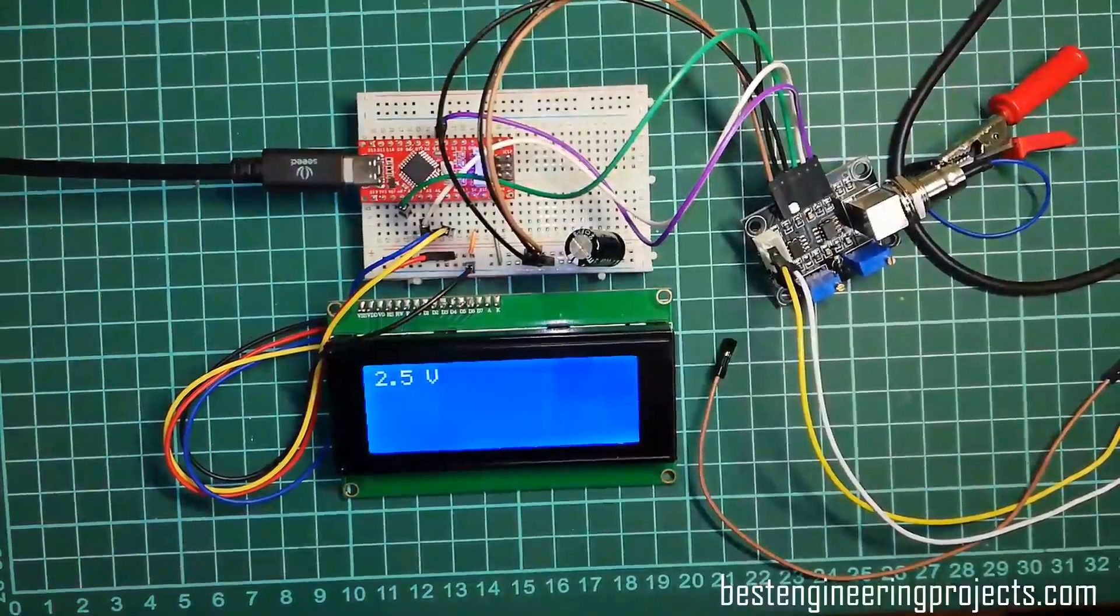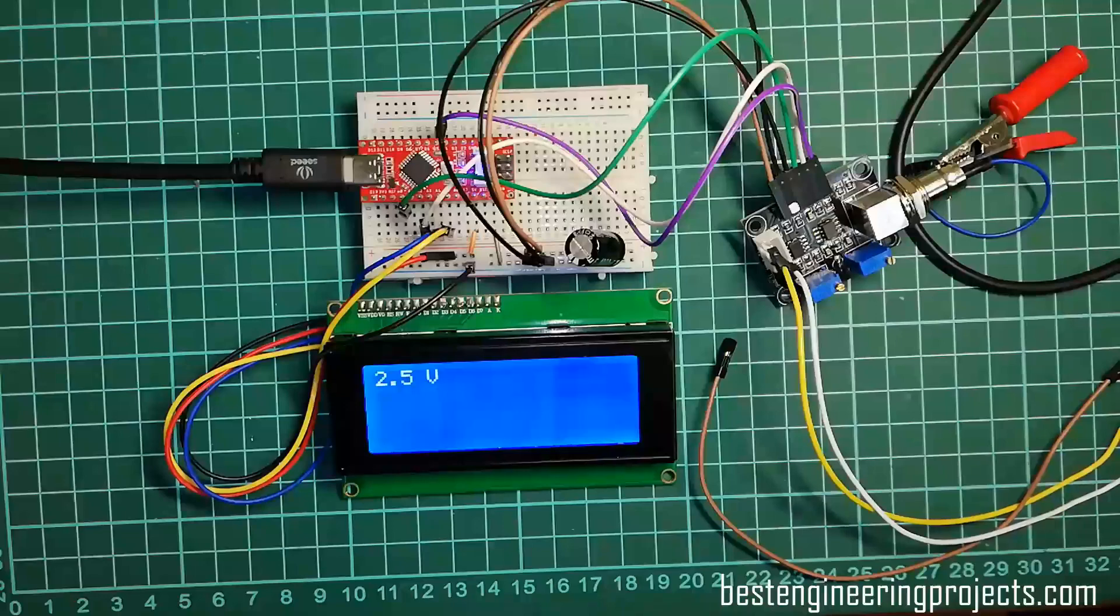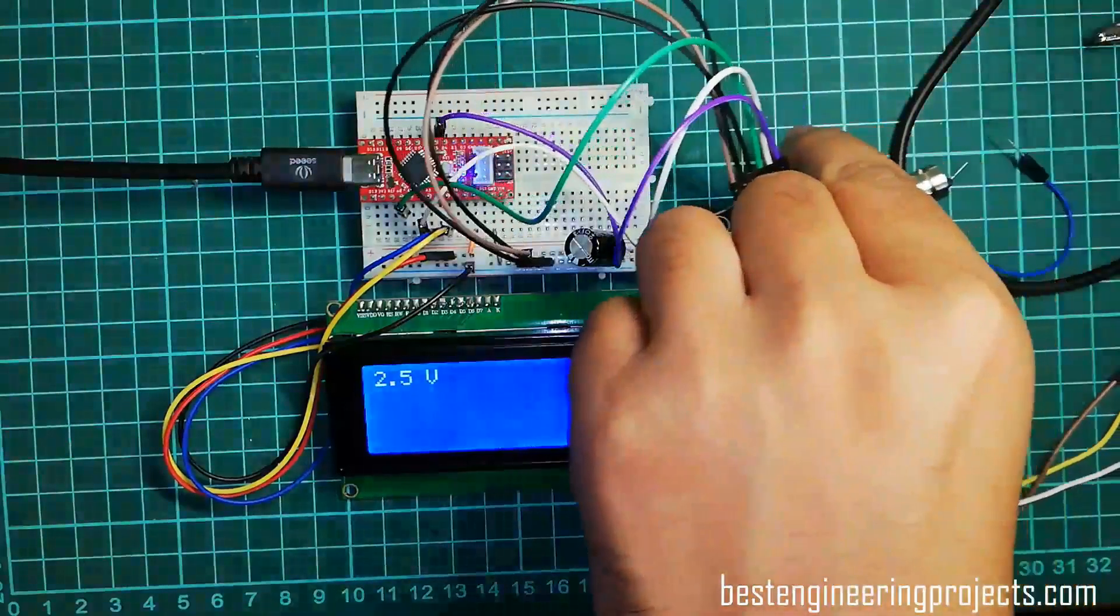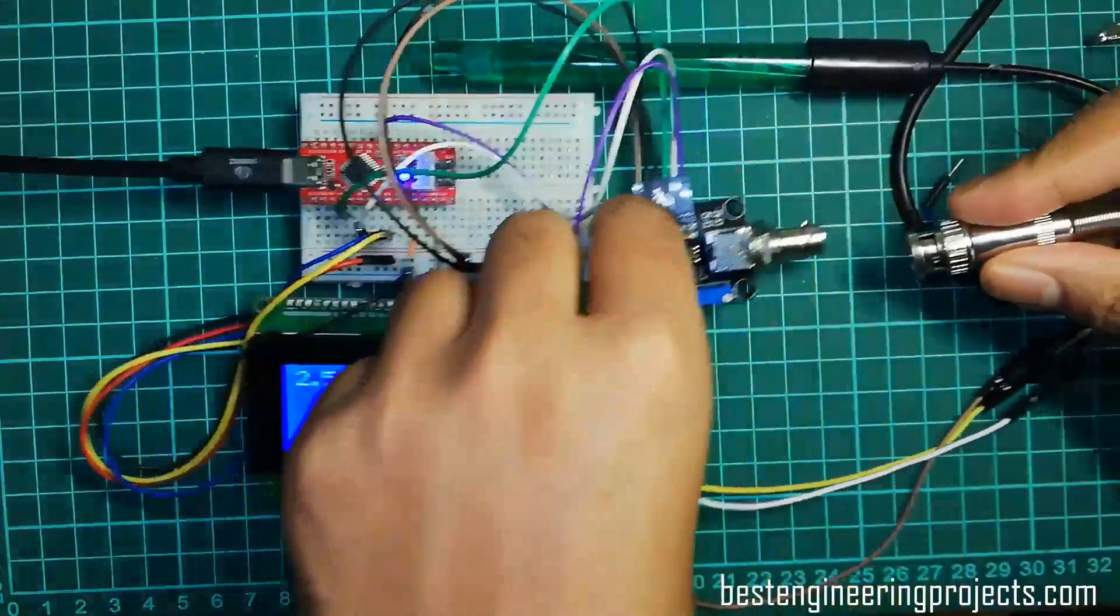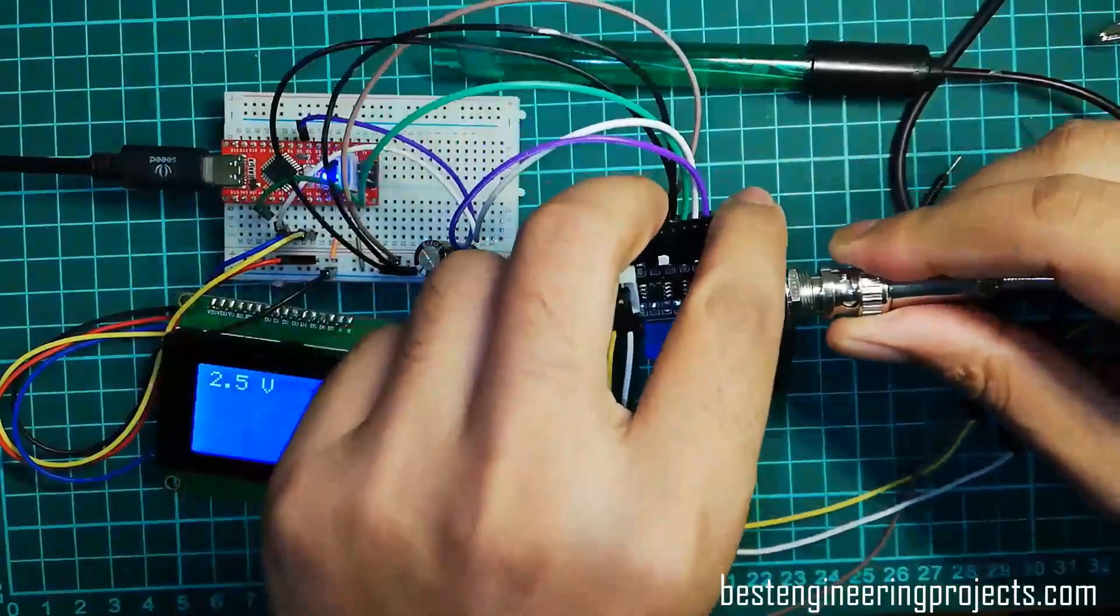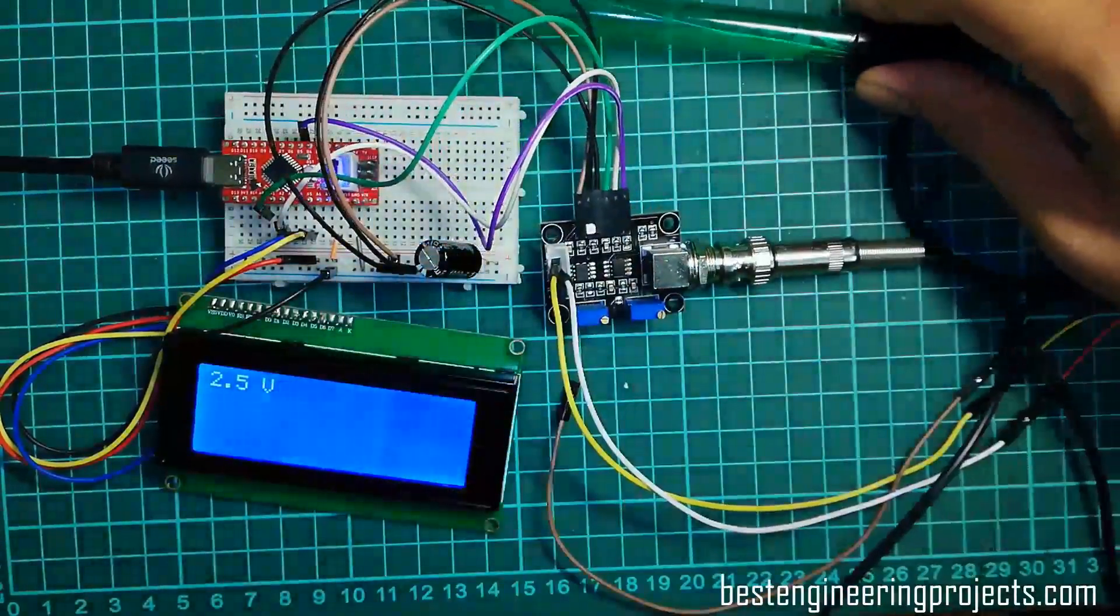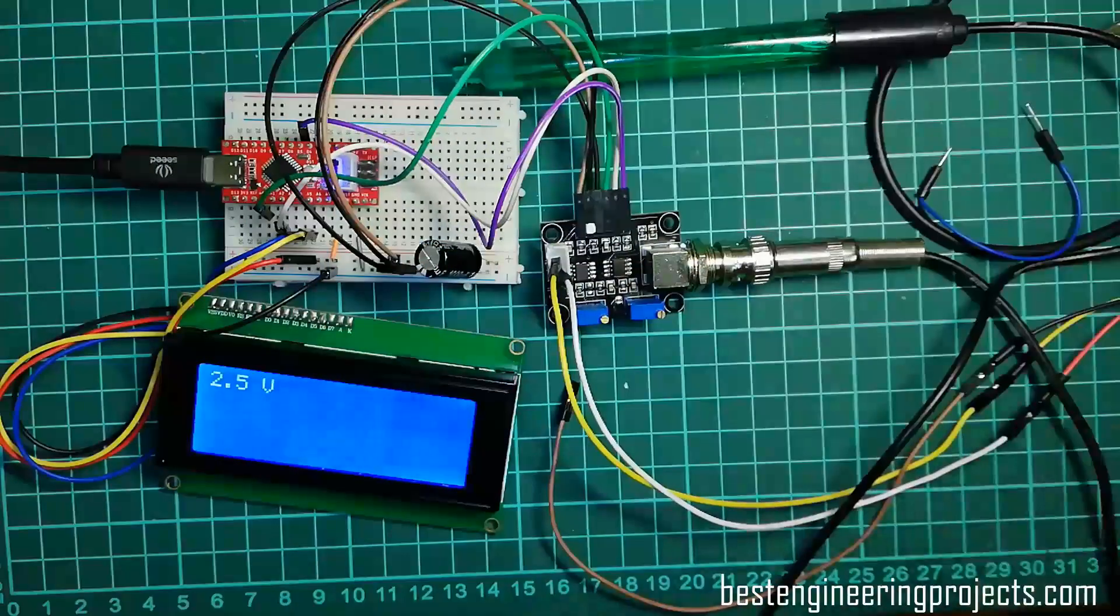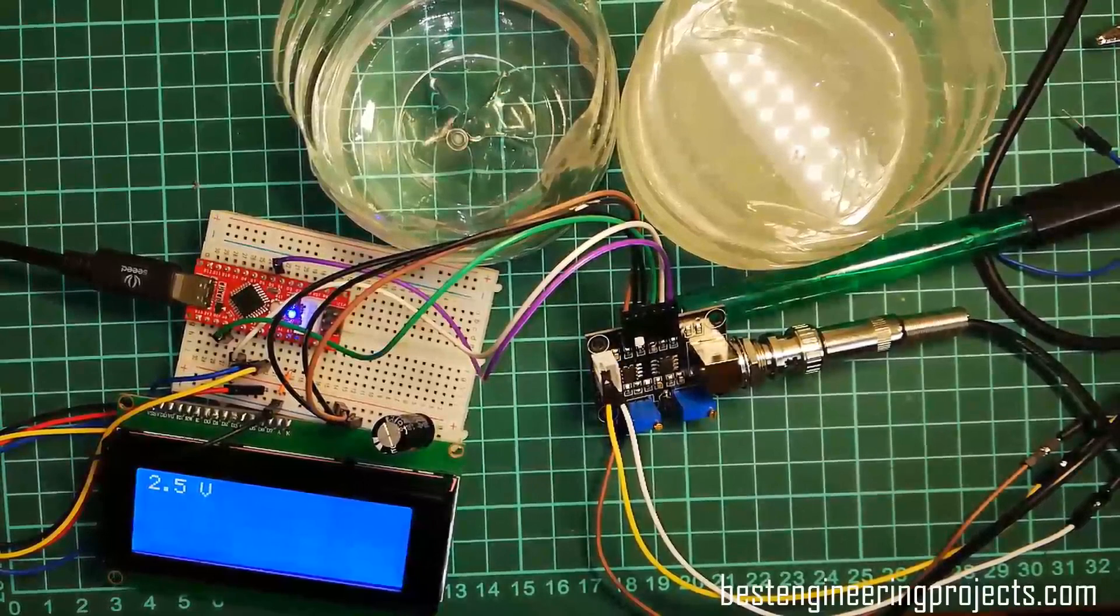After achieving 2.5 volts, I am connecting this electrode to the BNC connector and immerse this electrode into a known solution. Now, for calibration, I am taking two standard solutions.